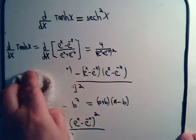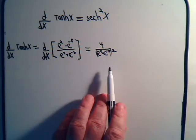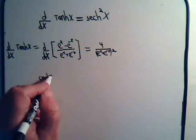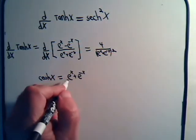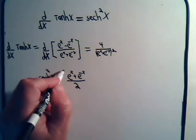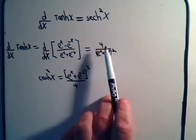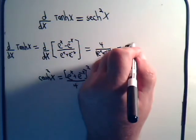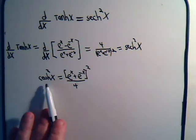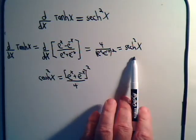Now, the hyperbolic cosine of x is e to the x plus e to the minus x over 2. If I square that, I get e to the x plus e to the minus x squared over 4. But here we have the reciprocal of that — which is 4 over e to the x plus e to the minus x squared — and that equals the hyperbolic secant squared of x. That's what we wanted to show.